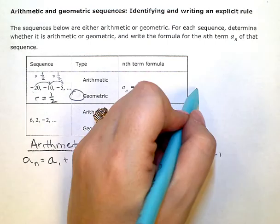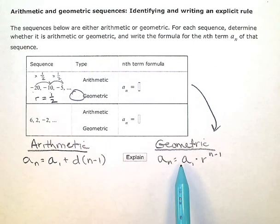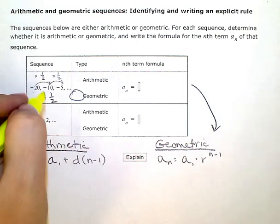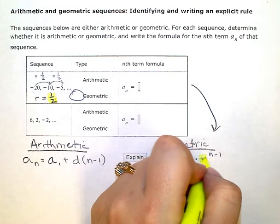Now that I've determined that this one is geometric, I'm going to write the explicit formula. In order to write the explicit formula, I need to know two things. I need to know, first of all, what the common ratio is. We just figured that out.